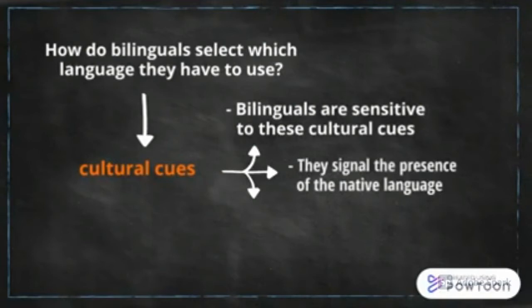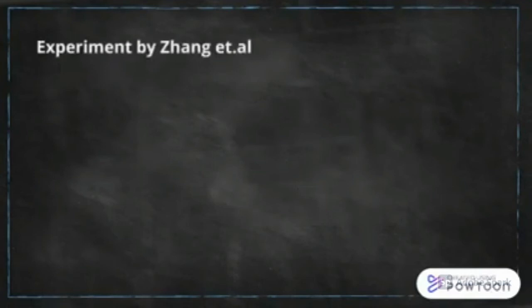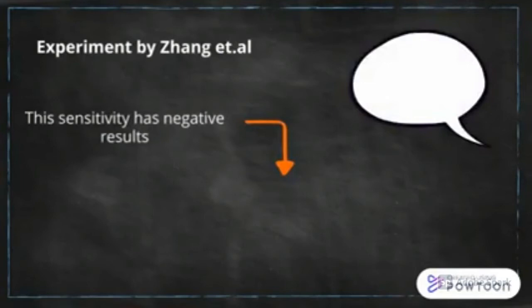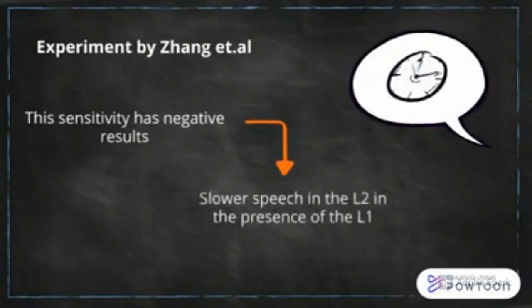Zhang et al. made an experiment which showed that this sensitivity to cultural cues has a negative impact on bilinguals, because when bilinguals speak in the L2 in the presence of other bilinguals who share the same L1, the L2 speech is much slower.